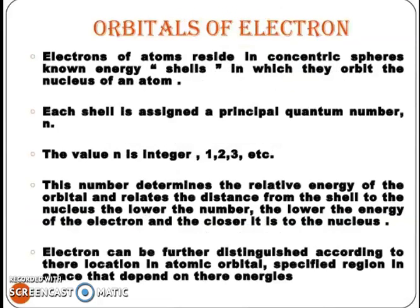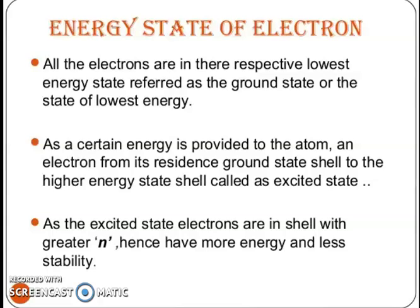Electrons of atoms reside in concentric spheres known as energy shells, in which they orbit the nucleus of an atom. Each shell is assigned a principal quantum number n, where n is an integer 1, 2, 3. This number determines the relative energy of the orbitals and relates the distance from the shell to the nucleus. The lower the number, the lower the energy of the electrons and the closer they are to the nucleus. Electrons can be further distinguished according to their location in atomic orbitals — a specified region in space that depends on their energy. All electrons are in their respective lowest energy state, referred to as the ground state.